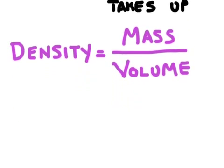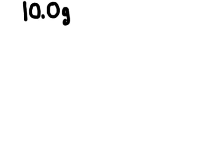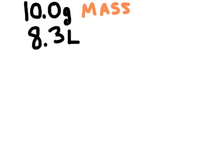Let's compare a substance with a high density to a substance with a low density. Air has a very low density. If we had 10 grams of air, we would have over 8 liters of air. Remember that grams is a measure of mass and liters is a measure of volume. So 10 grams of air would be enough to fill over ten 2-liter bottles.